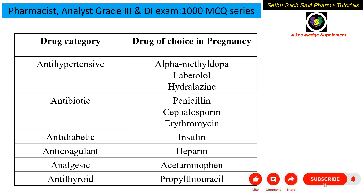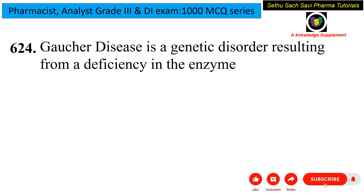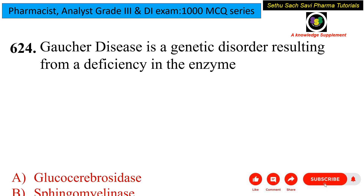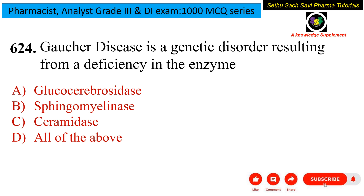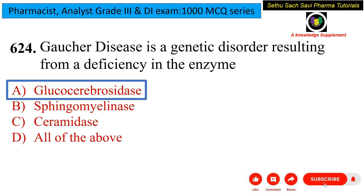Next question: Gaucher's disease is a genetic disorder resulting from a deficiency in which enzyme? Options are glucocerebrosidase, sphingomyelinase, ceramidase, or all of the above. In Gaucher's disease, a deficiency in a particular enzyme causes improper lipid metabolism, leading to lipid accumulation in organs such as spleen and liver. The deficient enzyme is glucocerebrosidase.